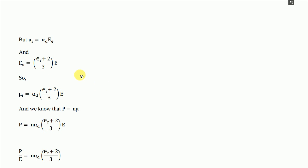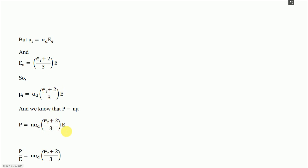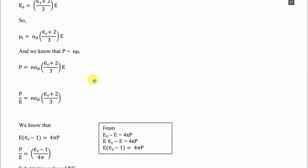Now in Part 3, we know μᵢ = αd·EE. Substituting the value of EE = E(εᵣ + 2)/3, we get μᵢ = αd·(εᵣ + 2)/3·E. Since P = n·μᵢ, we get P = n·αd·(εᵣ + 2)/3·E. Dividing both sides by E: P/E = n·αd·(εᵣ + 2)/3.